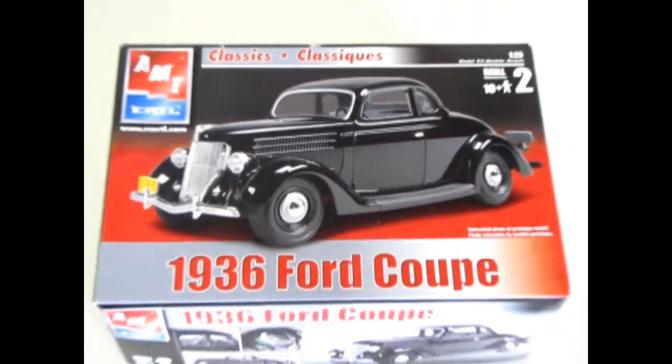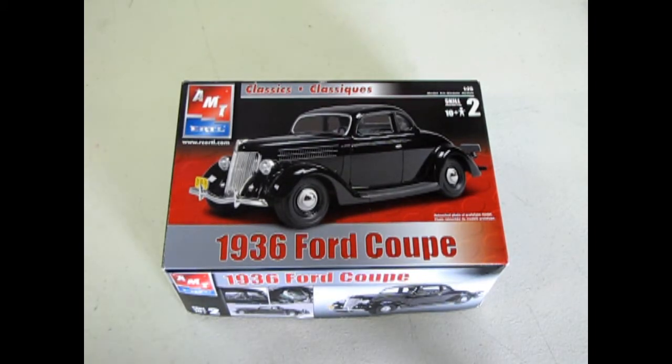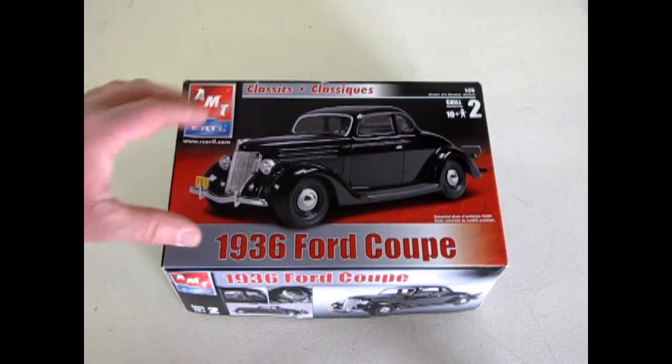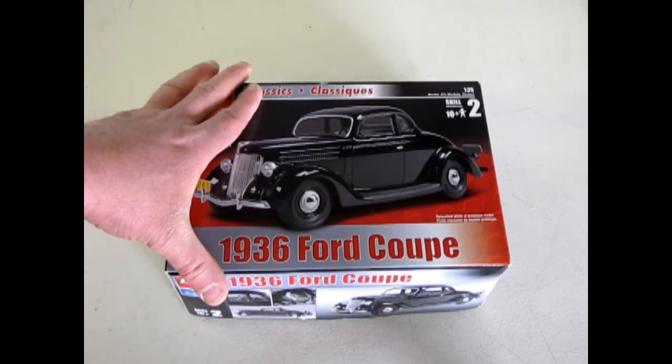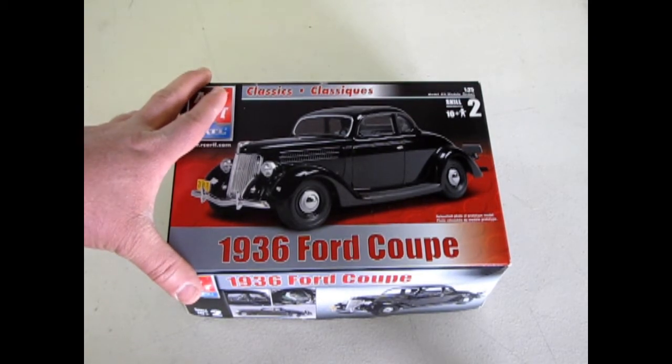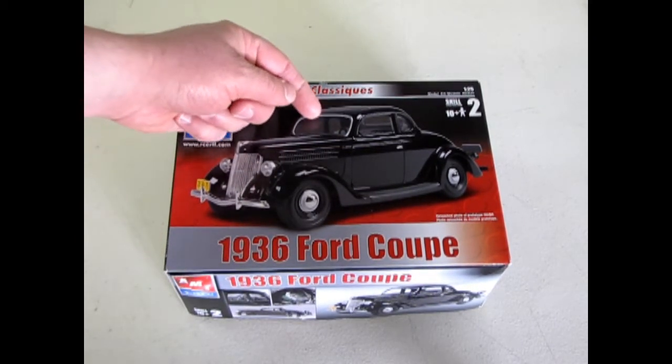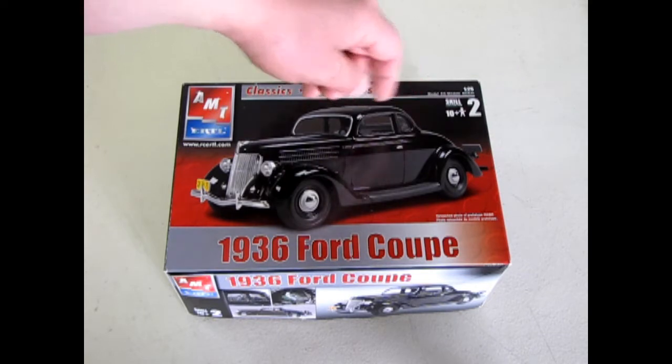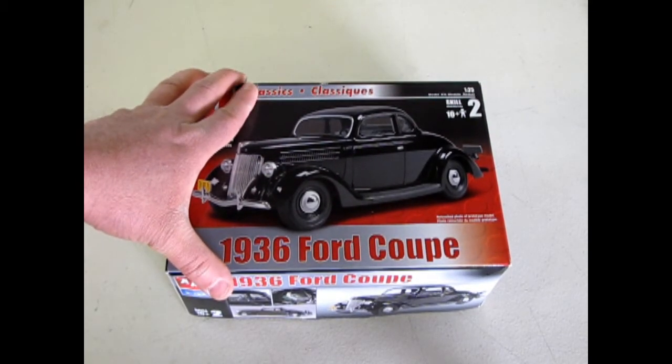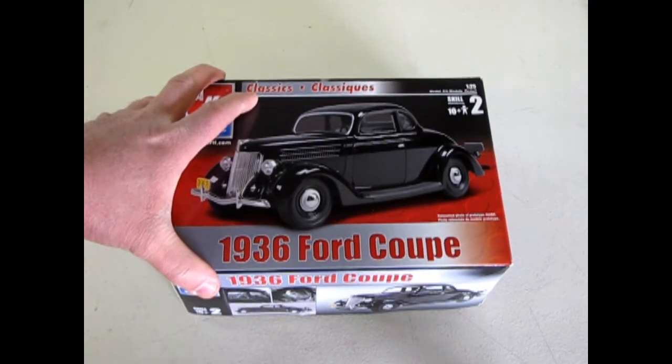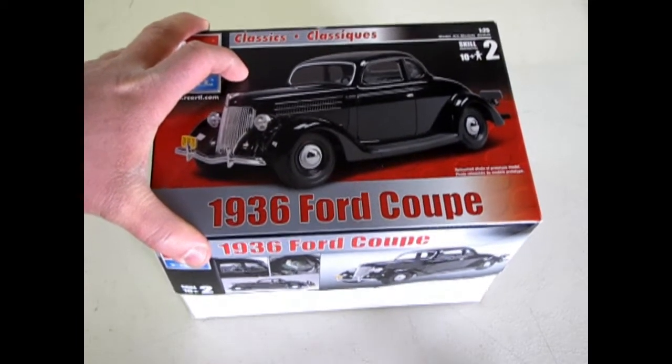And now we set our clocks back to the golden age of yesteryear when we look at AMT Ertl's 1936 Ford Coupe kit. And this is one of my favorite cars. I love the styling. It's quite an improvement over the 1935 Ford. This kit has been reissued many times and it's actually been modified. The original kit was a three-window coupe and had a removable roof and separate windshield and a convertible boot so you could make it as a convertible or a three-window coupe. The five-window came out when the Dick Tracy movie in the 90s came out.